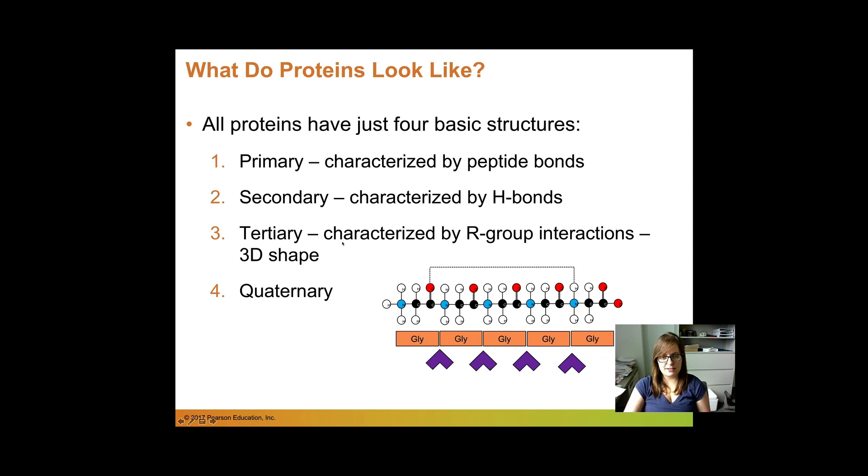The tertiary structure is characterized by R group interactions. So we talked a little bit about this when we talked about the R groups. Here's our primary structure based on peptides. Our secondary structure, hydrogen bonding that gives us alpha helices or beta sheets. And now we're up to our 3D shape. These are all glycines. So these are nonpolar. They just have the hydrogen. And as we talked about, those nonpolar R groups are going to cluster into the center of the protein. So we're already forming a 3D structure based on the R groups.